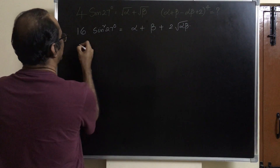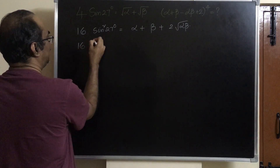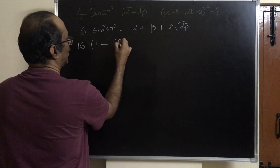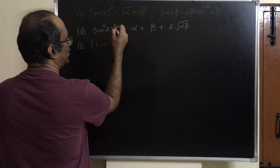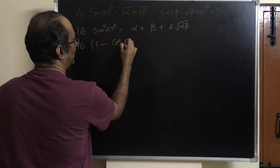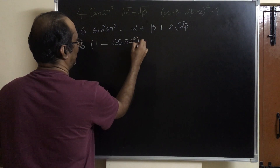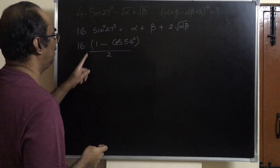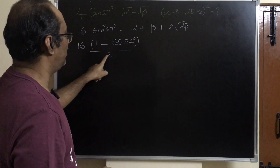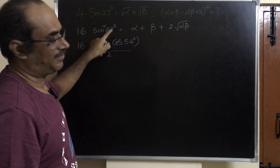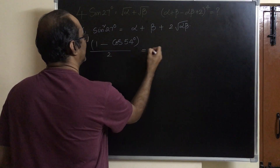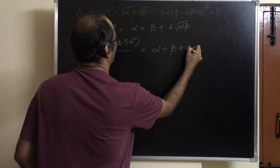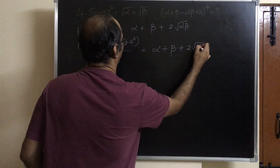Now, 16 sin squared 27. Sin squared 27 can be written as 1 minus cos 2a — that is, 1 minus cos 54 degrees — divided by 2. This comes from the formula sin squared a equals 1 minus cos 2a by 2, and this equals alpha plus beta plus 2 root alpha beta.